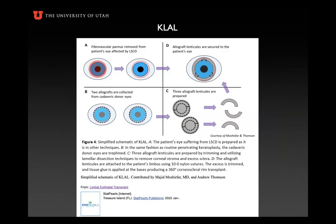This is a diagram from Dr. Moshifar from a recent online publication that just shows the idea of keratolimbal allograft. Panel A represents removing the scar tissue from the eye, and then taking two donor eyes that are relatively fresh and have good epithelium. The eye bank actually prepares these with a skirt of conjunctiva left. Three hemi-sections of the donor tissue are used to make a complete 360-degree barrier, as shown in panel B. That provides not only the limbal stem cells, but also a really strong barrier to re-conjunctivalization and vascularization.